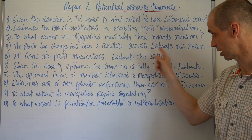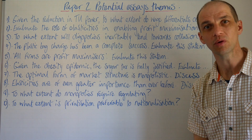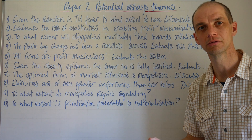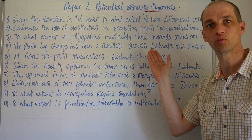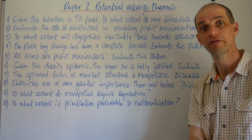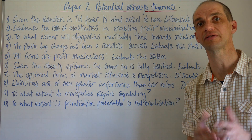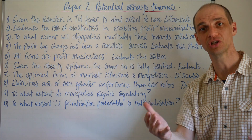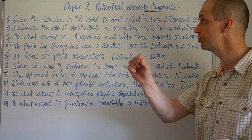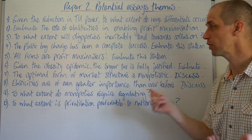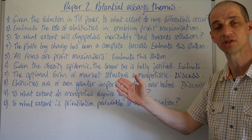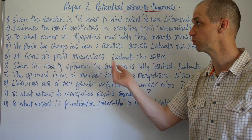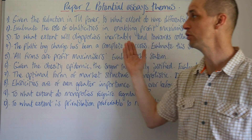Number four: the plastic bag charge has been a complete success — evaluate this statement. Has it been a complete success, and for which economic agents? Certainly not for plastic bag makers. What about the resources that go into producing a plastic bag versus reusable bags — are plastic bags actually more efficient than they're given credit for? There are negative consumption or production externalities involved, and there are lots of unintended consequences, including the risk of food poisoning from reusing bags in food shops.